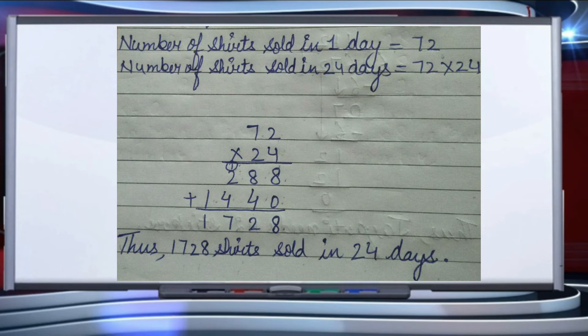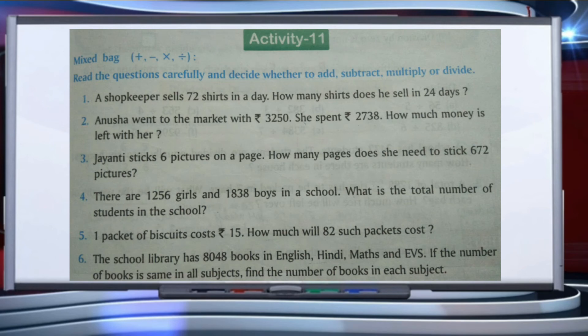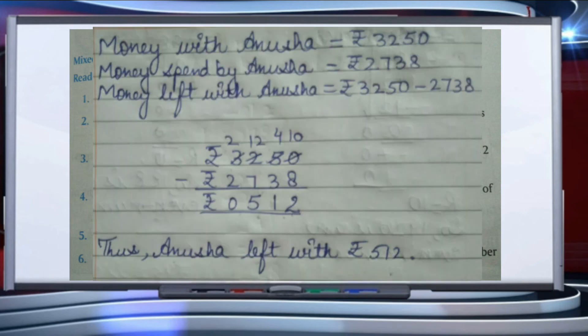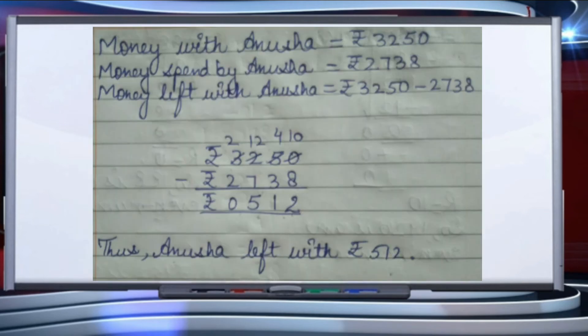The second question: Anusha went to the market with rupees 3250. She spent rupees 2738. How much money is left with her? Money with Anusha equals rupees 3250. Money spent by Anusha equals rupees 2738. Money left with Anusha equals 3250 minus 2738.